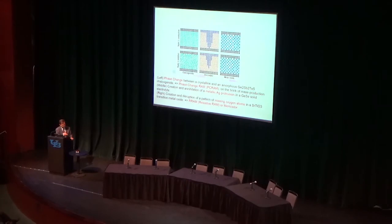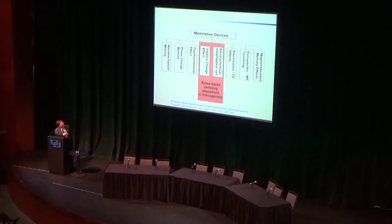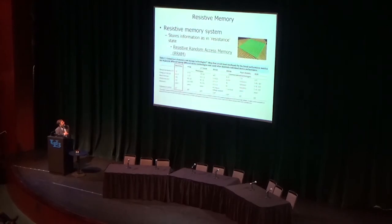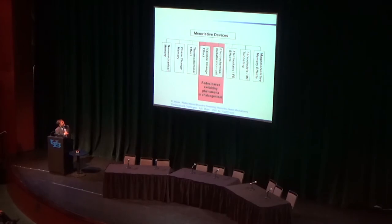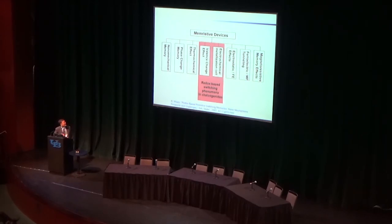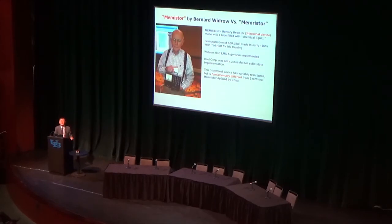A professor in the field declared there is a big class of memristive devices: nano mechanical memory, phase change memory, thermochemical effect, valence change effect, electrochemical metallization cell. All of these are listed in Nature. It's called the redox-based switching phenomena, especially highlighted in the red column. So the class is very broad — phase change memory, R-RAM, all fall under this category.